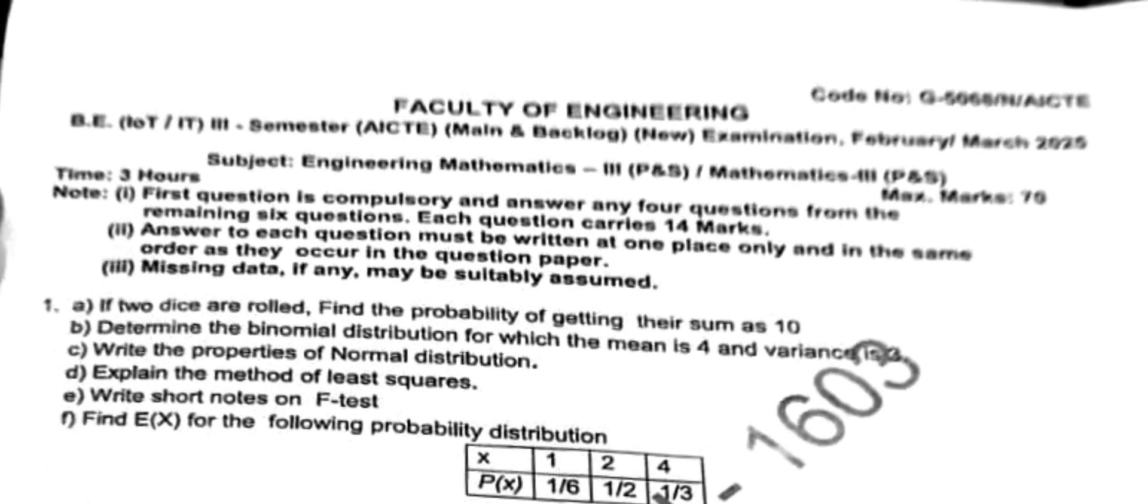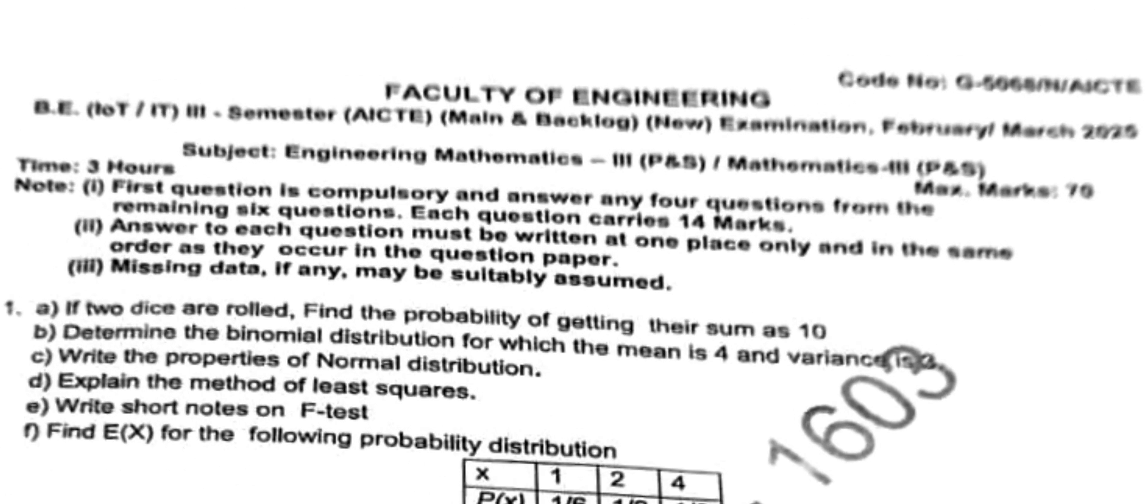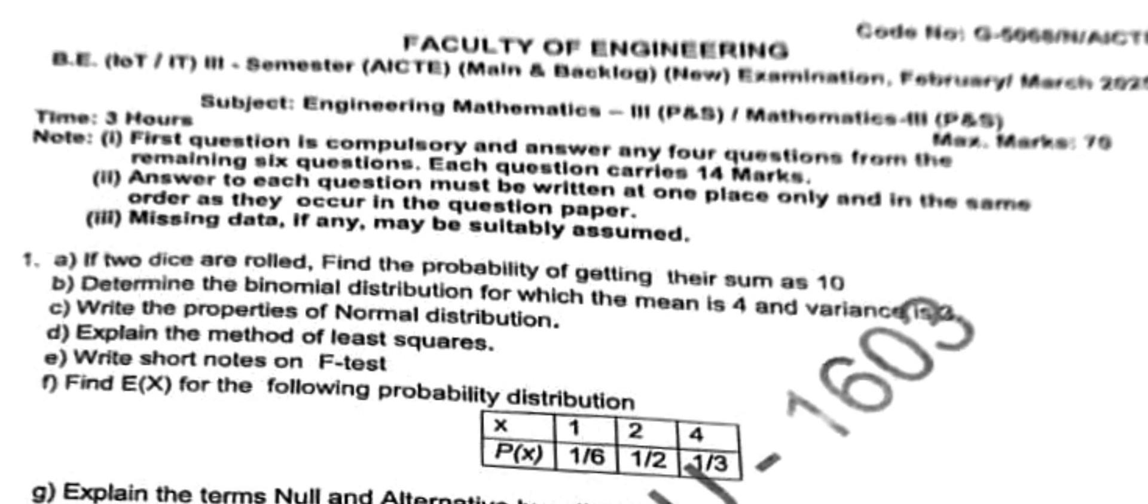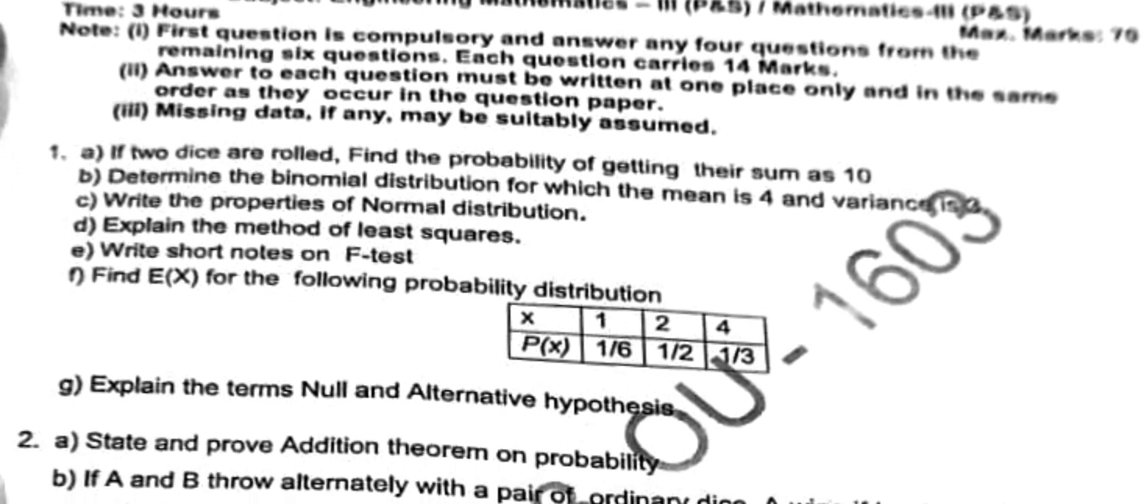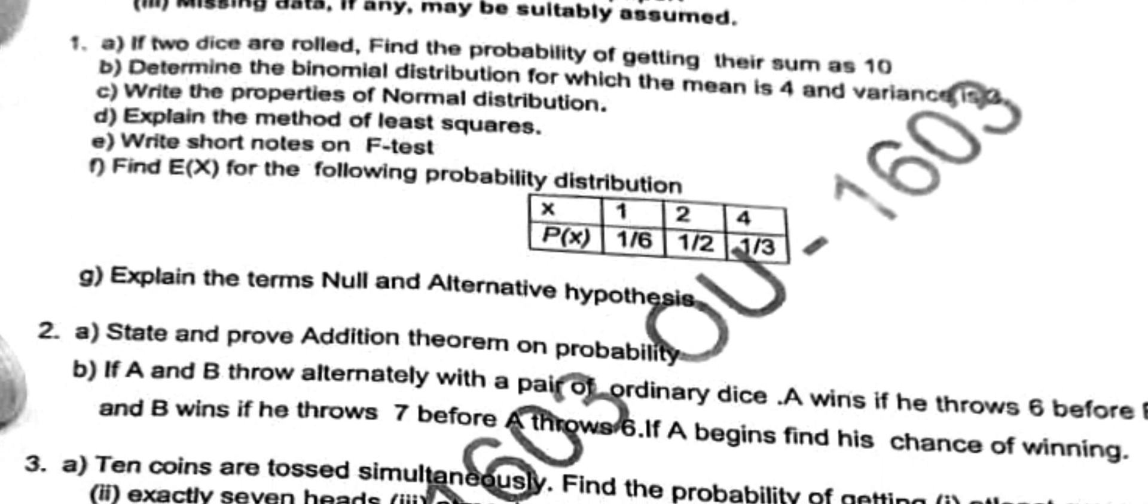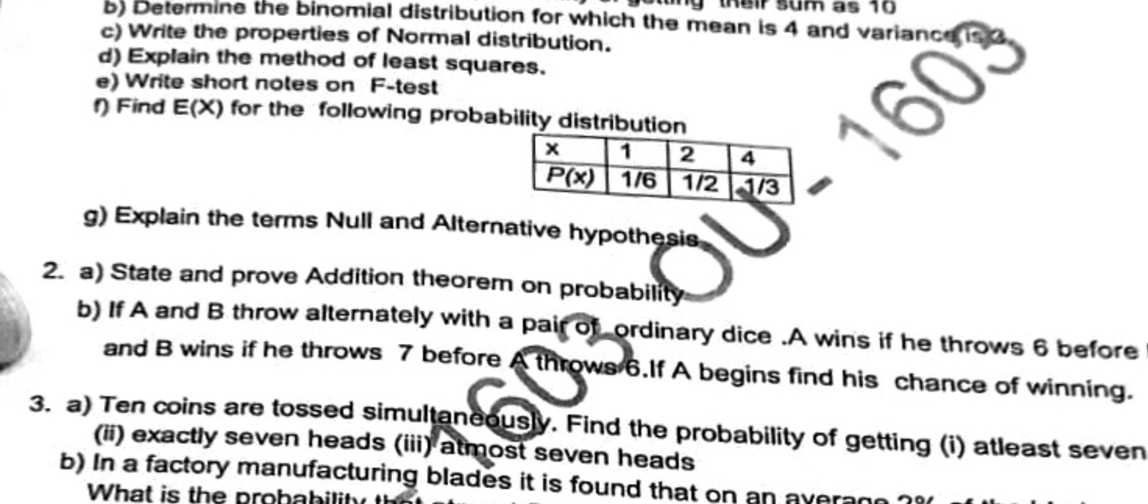Next, for IT students: if two dice are rolled find the probability of getting their sum as 10 - sum as 10 we get three cases, so 3 by 36, 1 by 12. Then determine the binomial distribution - mean he gave, variance he gave, similar type we've done already. He is asking properties of normal distribution, this also we completed. Method of least squares you have to explain the method - how to fit a straight line, parabola, that method you have to write. Then write a short note on F-test, this also we completed. Then he is asking mean, expectation E of X. G is asking null hypothesis and alternative hypothesis.